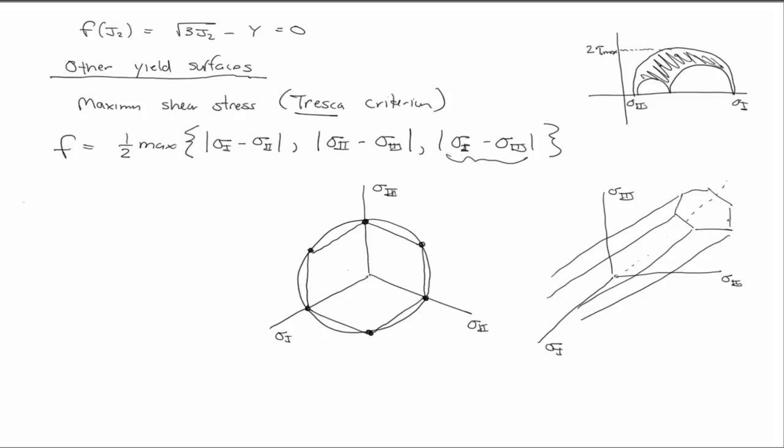It's kind of a complicated expression, but it's equal to 4J2 cubed minus 27J3 squared minus 9J2 squared plus 6J2 to the fourth minus Y to the sixth, and that's equal to zero.